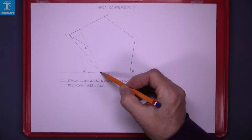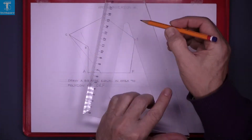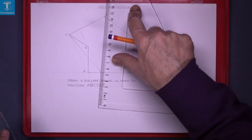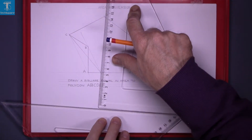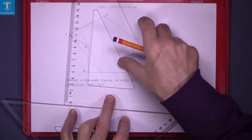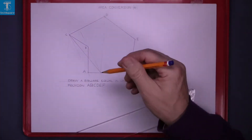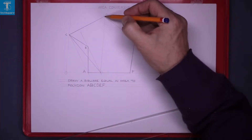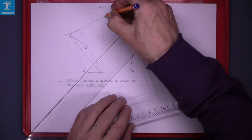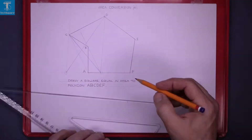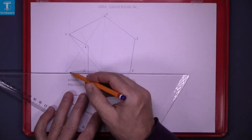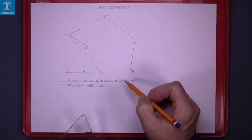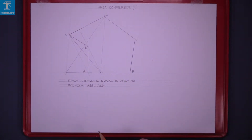Now join D to the new point on the base and draw a parallel to that line through C. That gives us a new point, and joining from D, we now have a four-sided figure equal in area to the original six-sided figure.